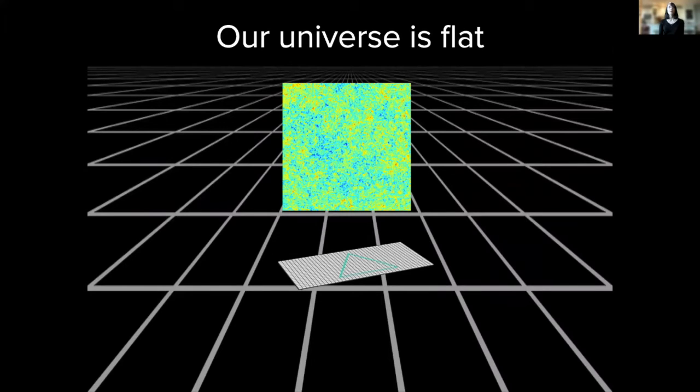We can now make very precise measurements of the sizes of these spots in the cosmic microwave background radiation. And what that tells us is that the universe has exactly the right amount of matter to not be curved at all.